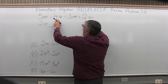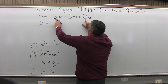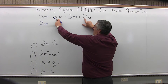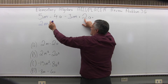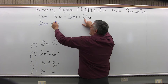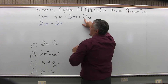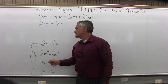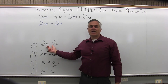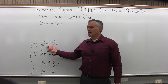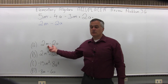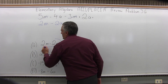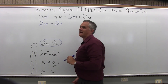Now for the other variable, the a: I have negative 4a and positive 2a. So negative 4 and positive 2 is negative 2, and the variable for that is a. Looking at the list of possible options, option a is an exact match — 2m minus 2a. So the answer for number 36 is option a.